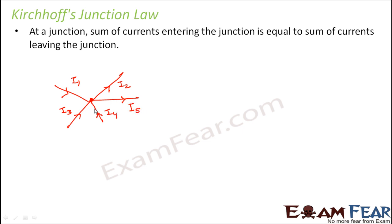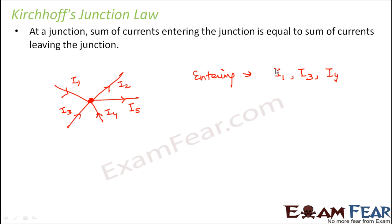So if you talk about this particular junction, the currents which are entering the junction are I1, I3, and I4. However, the currents leaving the junction are I2 and I5.